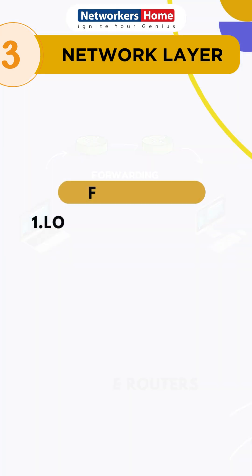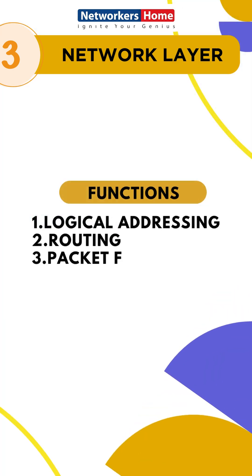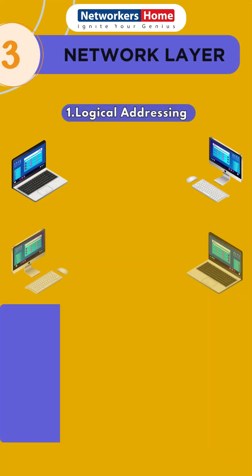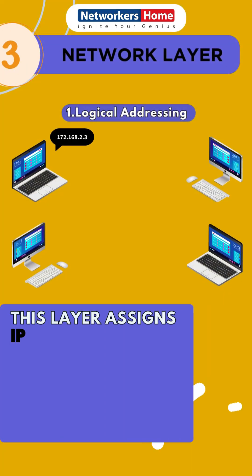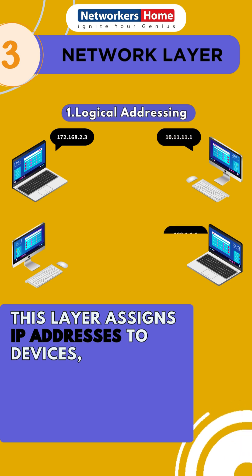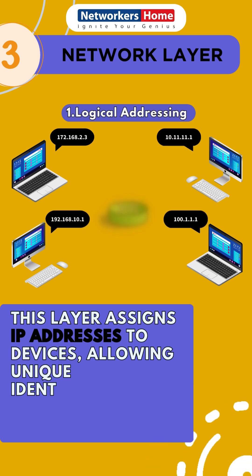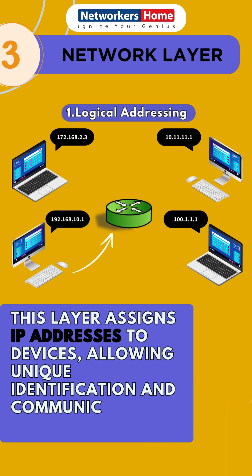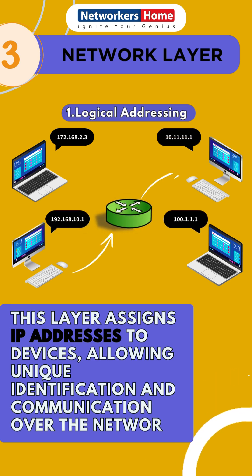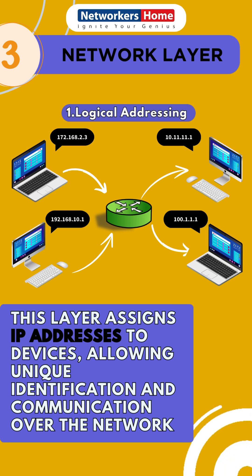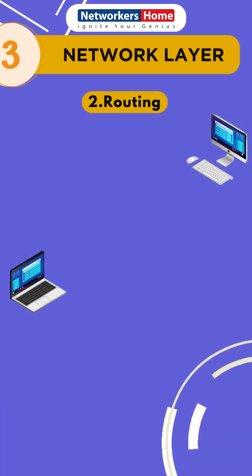The network layer has three main functions. First, logical addressing. This layer assigns IP addresses to devices, allowing unique identification and communication over the network.